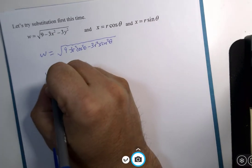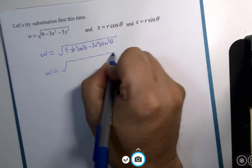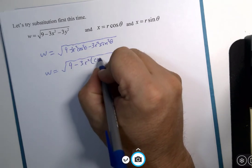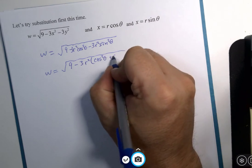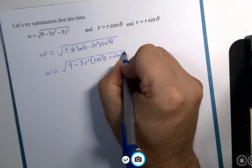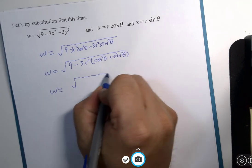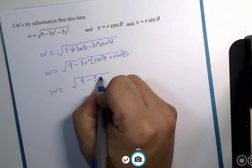And that means w is nine minus three r squared times cosine squared theta plus sine squared theta, otherwise known as one. So that means w is the square root of nine minus three r squared.